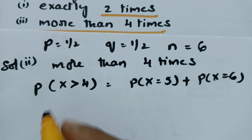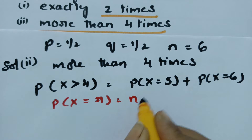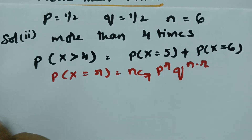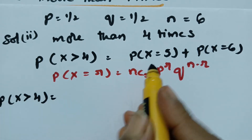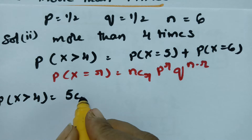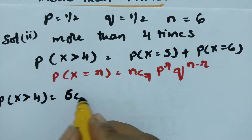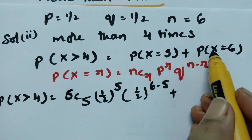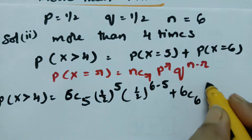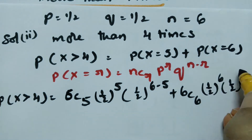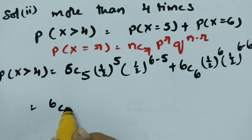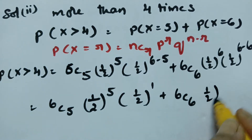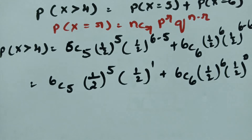Using the formula P(X = r) = nCr times P^r times Q^(n−r), we substitute: P(X > 4) equals 6C5 times (1/2)^5 times (1/2)^1 plus 6C6 times (1/2)^6 times (1/2)^0. Now 6C5 equals 6, and 6C6 equals 1, giving 6 times (1/2)^6 plus 1 times (1/2)^6.